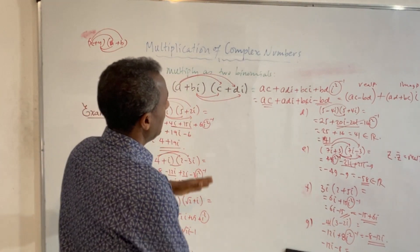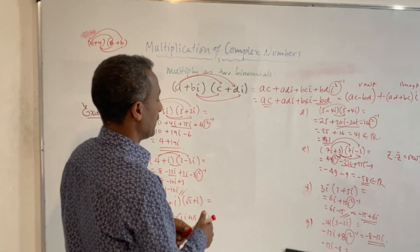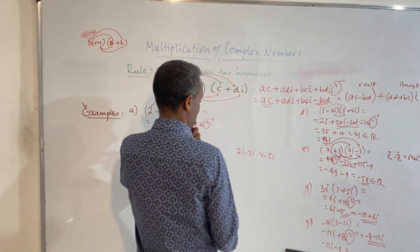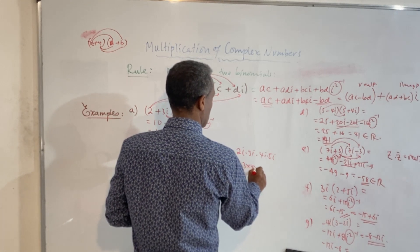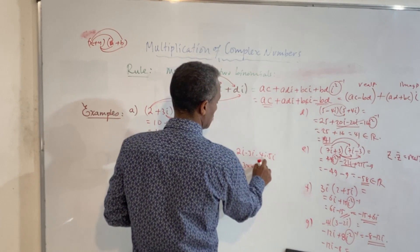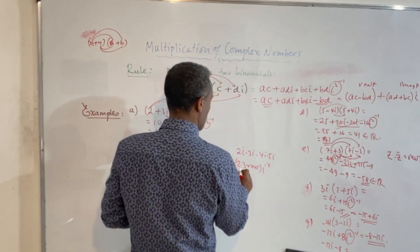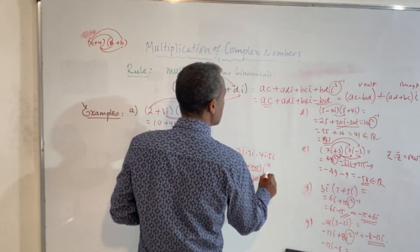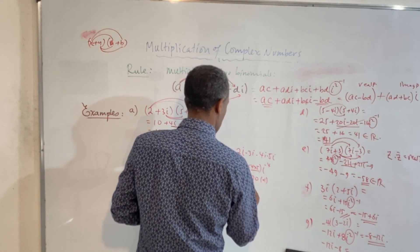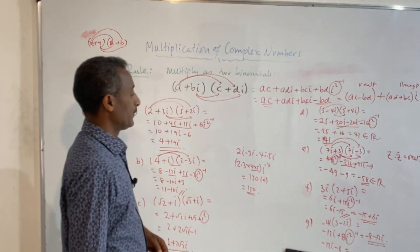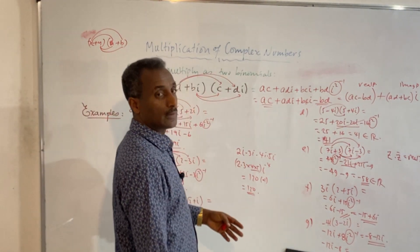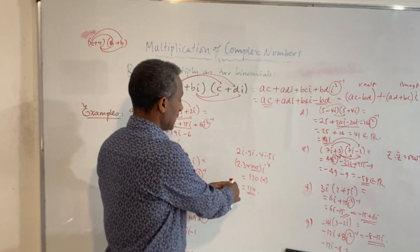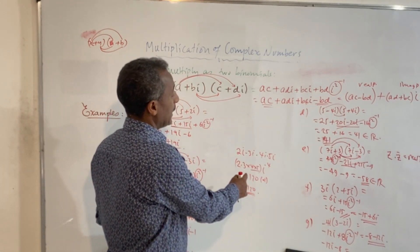We can multiply any complex number — for example, 2i times 3i times 4i and so on. You multiply the numbers together and you add the exponents of the i's.